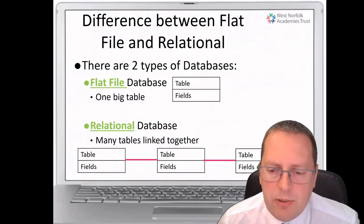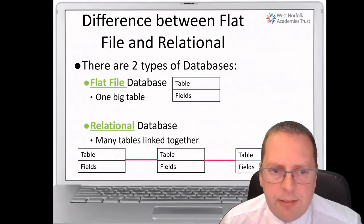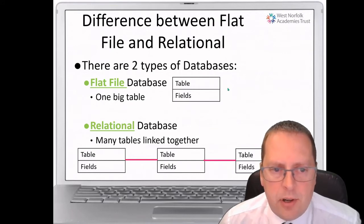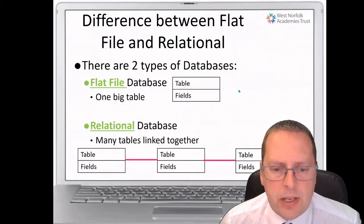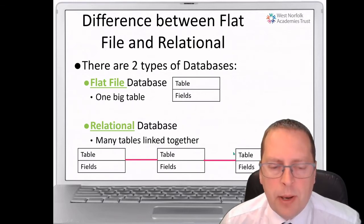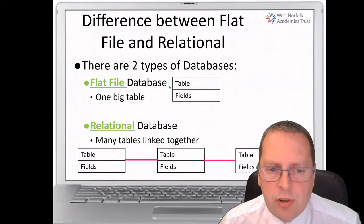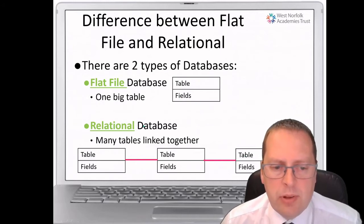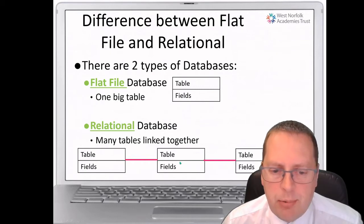We now move on to looking at the difference between a flat file database and a relational database. There are two types of database. A flat file is generally a more simple database — just one big table of data. A relational database tends to be a little bit more complex — separate tables all linked together.